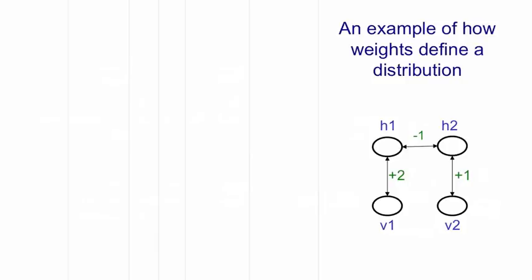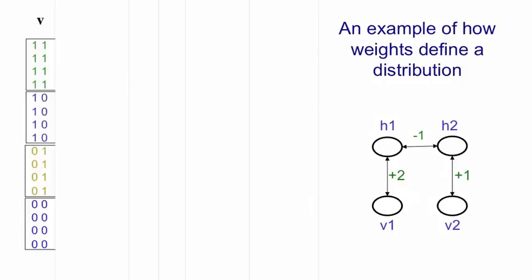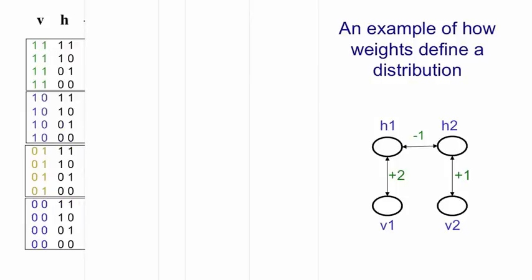So the first thing we do is write down all possible states of the visible units. I'm going to put them in different colors and I'm going to write each state four times because for each state of the visible units, there's four possible states of the hidden units that could go with it. So that gives us 16 possible joint configurations.